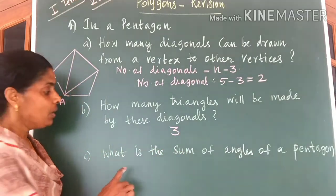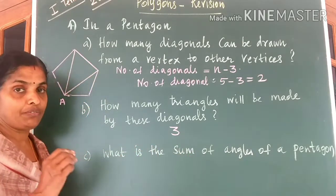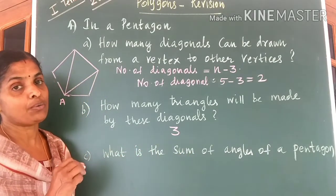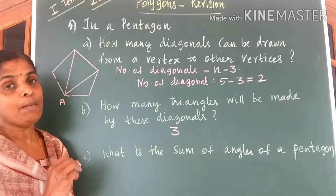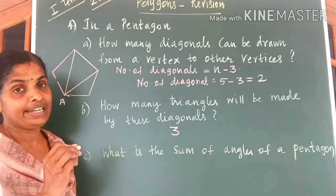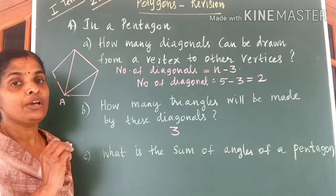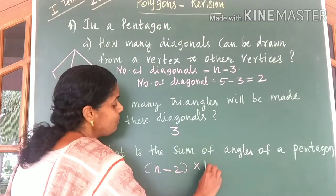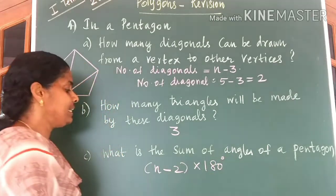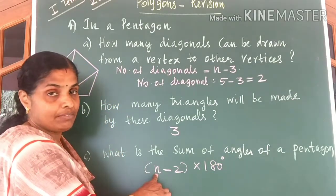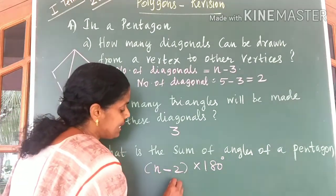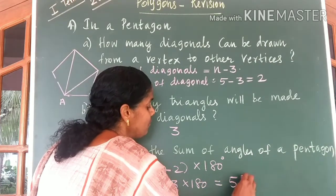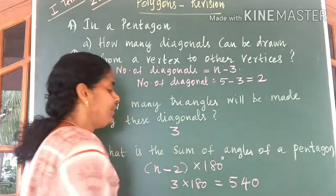Third part of the question: what is the sum of angles of a pentagon? For a triangle it is 180, quadrilateral 360, pentagon 540. Or you can use the formula (N minus 2) into 180 degrees, where N equals 5. So you get (5 minus 2) into 180, that is 3 into 180 degrees, which gives you 540 degrees.